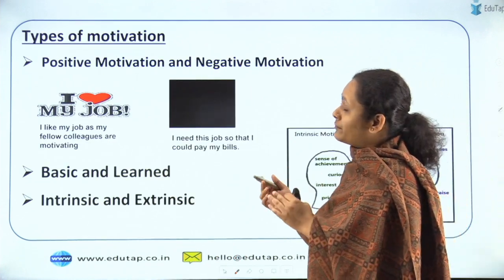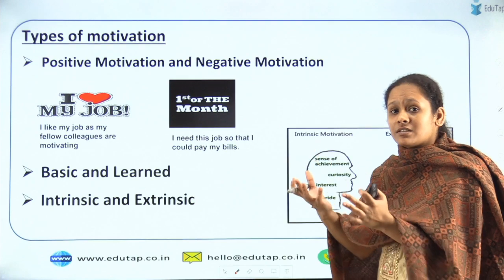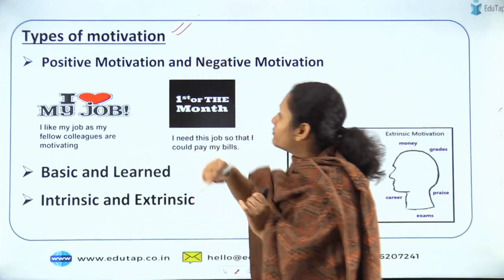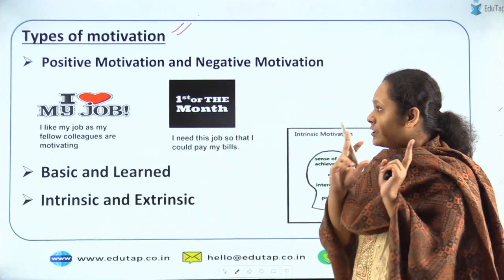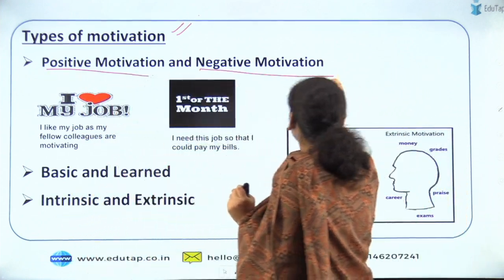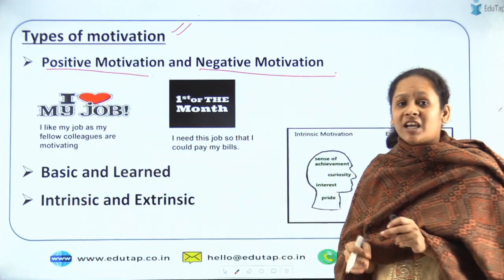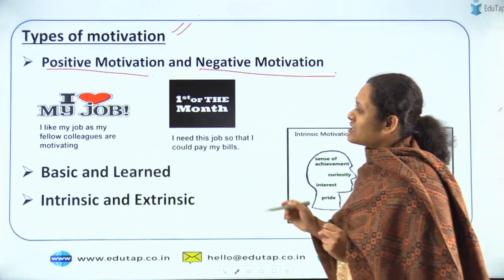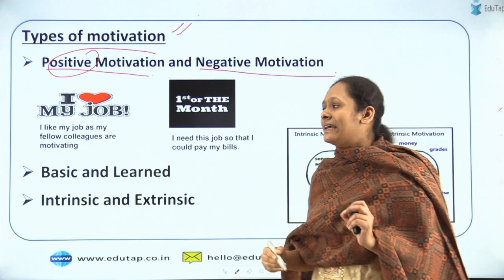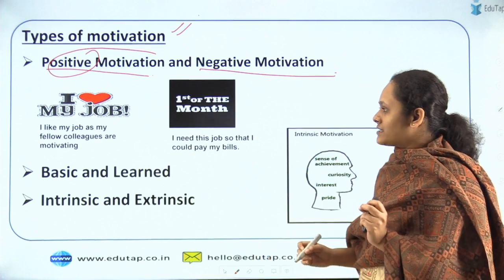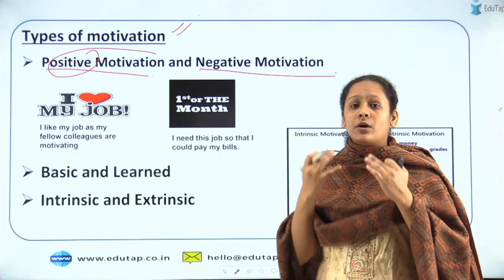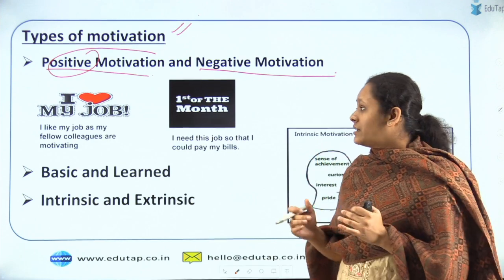Now that we have completed how the motivation process works, let's understand the types of motivation. There are two types: the first classification is positive motivation and the second is negative motivation. Positive motivation is a positive feeling — you do something because you are motivated positively from within.